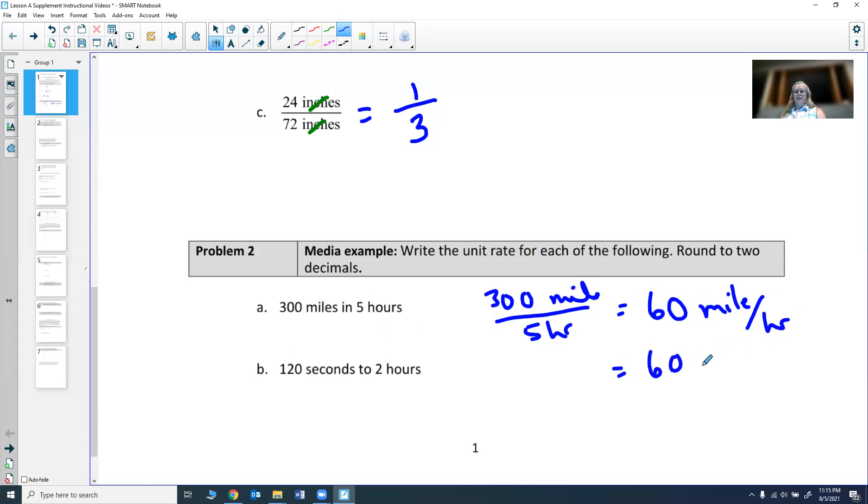In our vernacular, we like to think of this as 60 MPH for miles per hour.